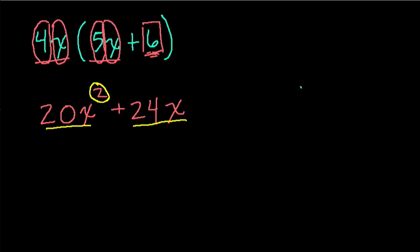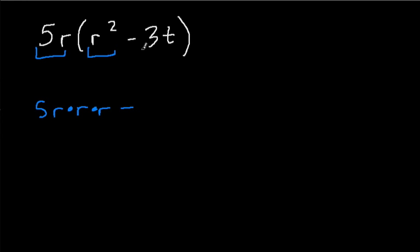Keep going with the next one. I'm trying to give you plenty of practice here so you can really master these kind of problems. What if we had 5r times (r² - 3t)? This is almost the same problem. 5r times r² means 5 times r times r², which is really r times r.